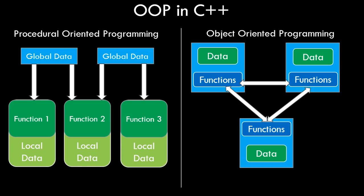Procedural oriented programming generally is not very suitable for real world scenarios and is more suited for mathematical computations or scenarios where the data is not very crucial. In object oriented programming, the data and the functions that operate on the data are bundled together inside objects, and these objects are essentially variables of type class. A class is sort of like a template which we can use to create our own custom variables, similar to structures we've seen previously.